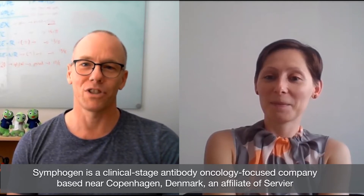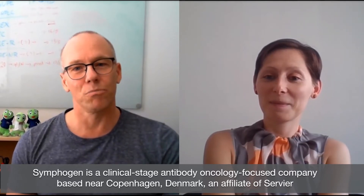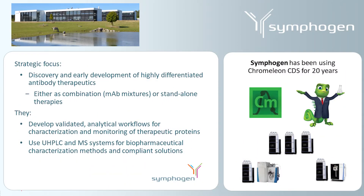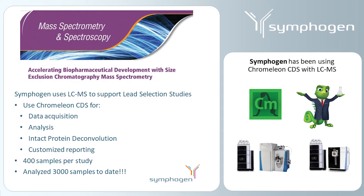We've been using Chromeleon for almost 20 years now at Symfogen. Lately we started to move into the mass spectrometry area, because with the advance of a lot of cool new mass spectrometry technologies such as native MS, we are relying a lot on mass spectrometry in early development. For instance, when we do lead selection studies, we will typically analyze 400 samples in one go. So that means we have a lot of data to process and we really need a system that's robust and efficient, both at acquiring data, but also the data processing, which can be time consuming when looking at mass spectrometry data.